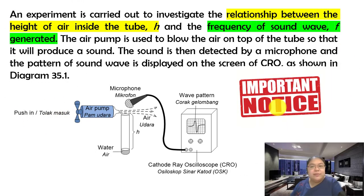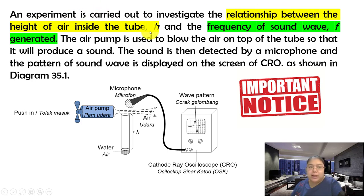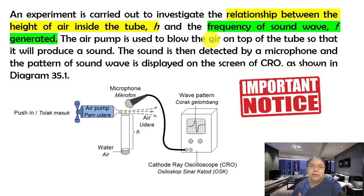Let's see the first question. An important note: the question says an experiment is carried out to investigate the relationship between two physical quantities — the height of the air in the tube (h) and the frequency of the sound wave (f). One will become the manipulate variable and the other the responding variable. Continue reading to find out which is which.